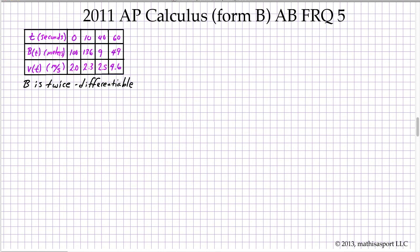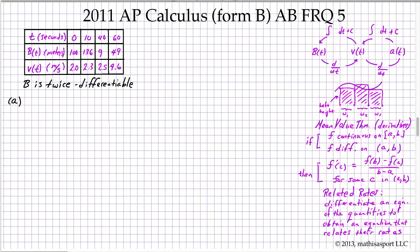In this problem we're given B, the position of a unicyclist as a function of time, and we're also given the unicyclist's velocity as a function of time, but not in any symbolic form, but rather we're given the values of position and velocity for selected points in time. From that we're asked to answer a series of questions.